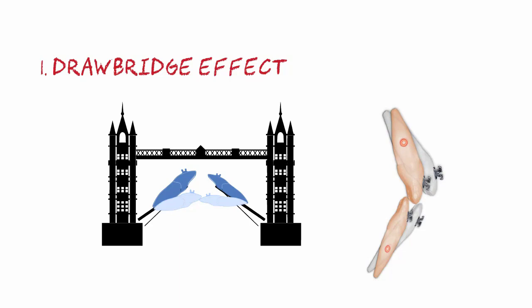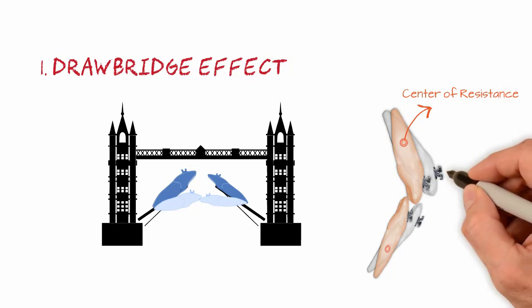This occurs by rotating the tooth around its center of resistance. This effect can be beneficial when we want to close an open bite, for example. But it can also be an unwanted effect when the uncontrolled proclination of the teeth causes the opening of the bite.